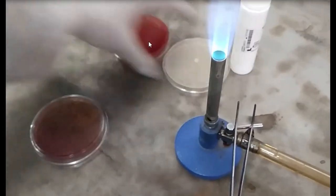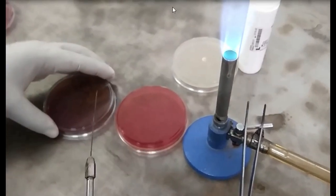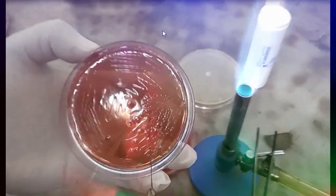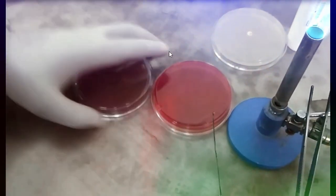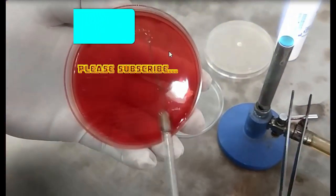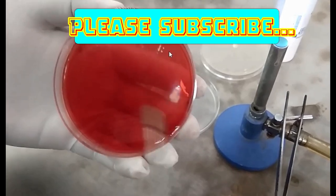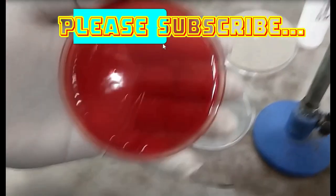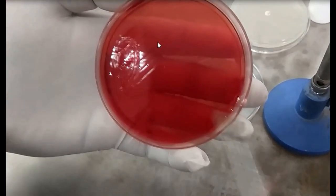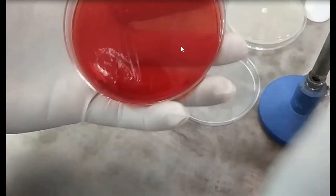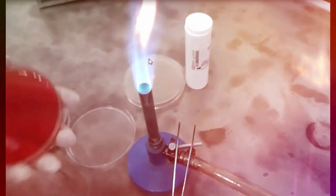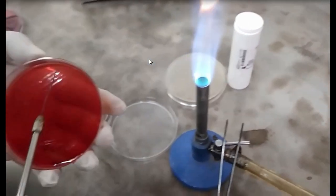If you are inoculating the specimen or making serial dilutions or streaking, these types of activities, sterilizing the loop is done by this Bunsen burner.